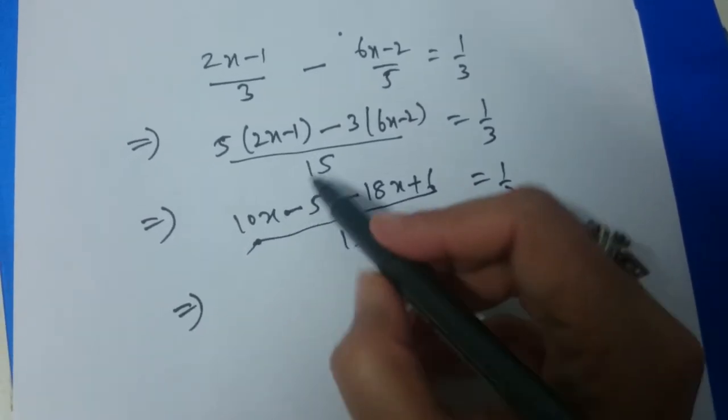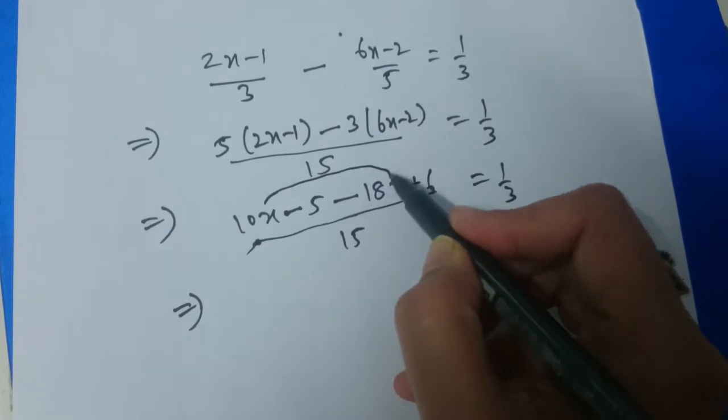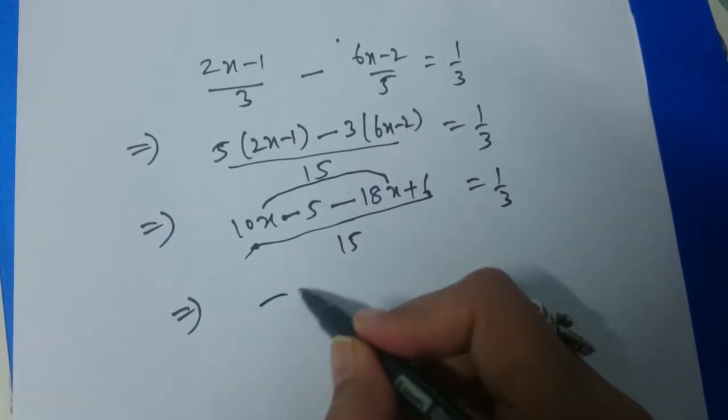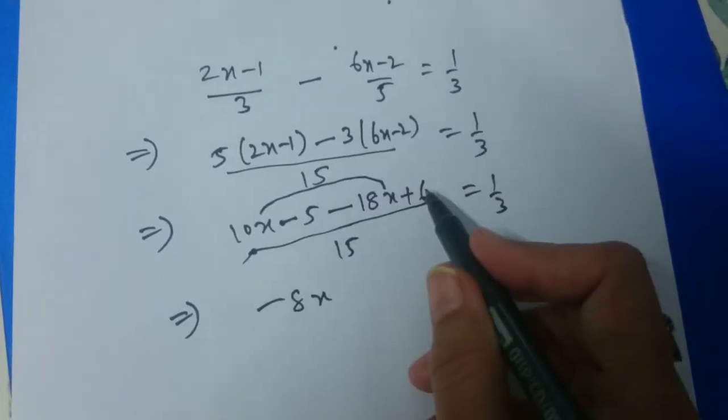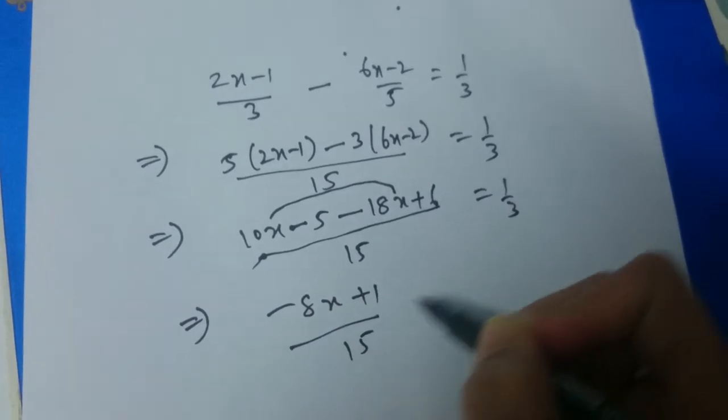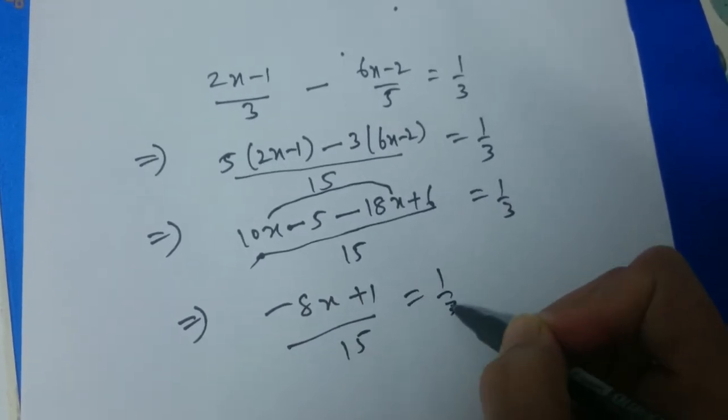This implies now 10x minus 18x is minus 8x, minus 5 plus 6 is plus 1, divided by 15 is equal to 1 by 3.